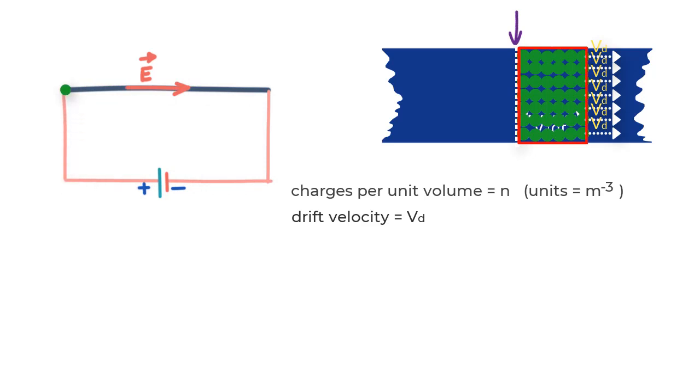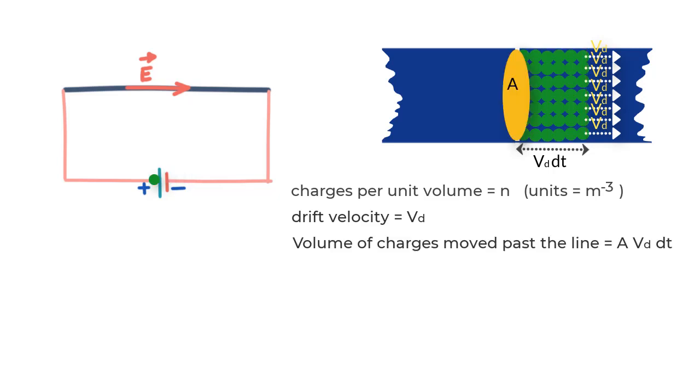then this volume contains N A Vd dt charges in it. Now if we say that the charge value of each charge is e, then the value of dq or the charge that passes by in time dt is e into N A Vd dt.